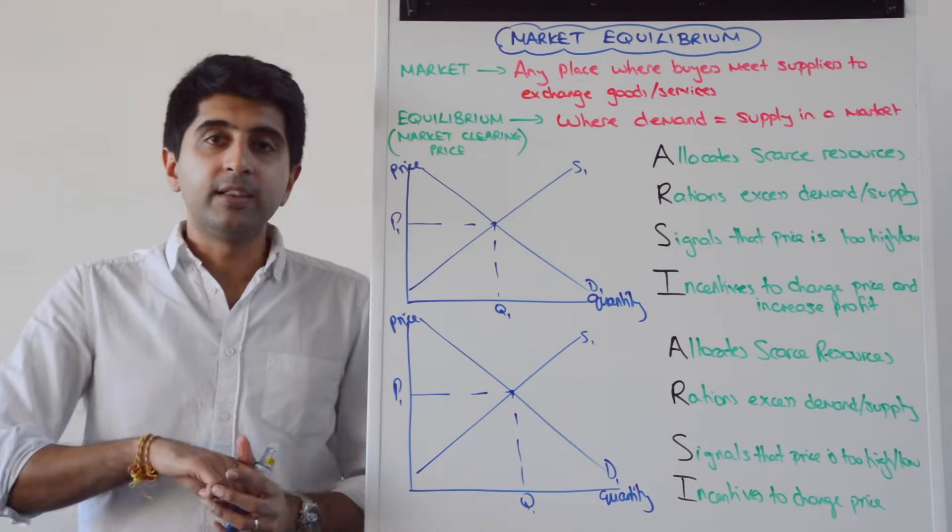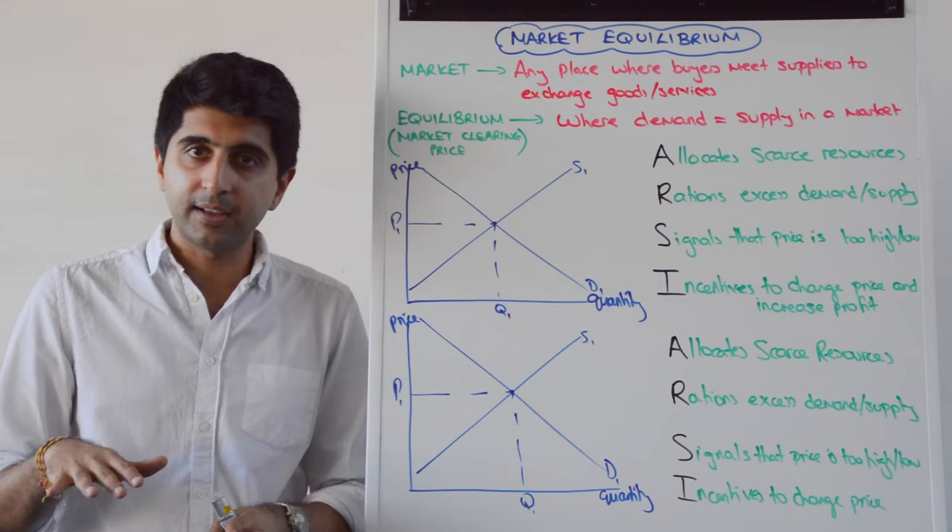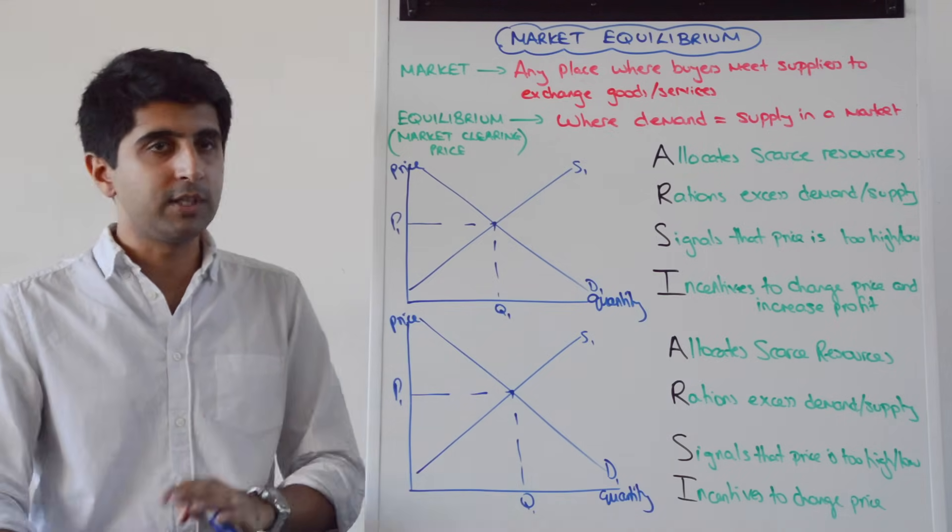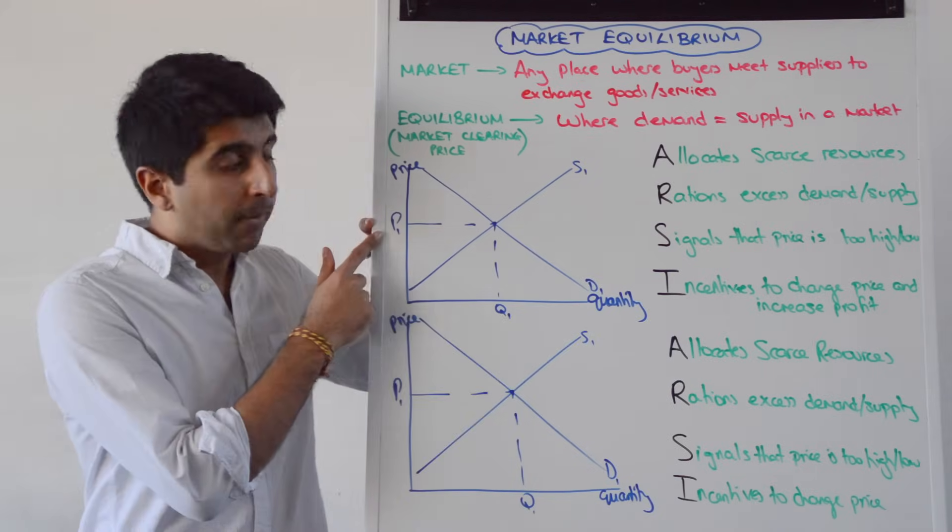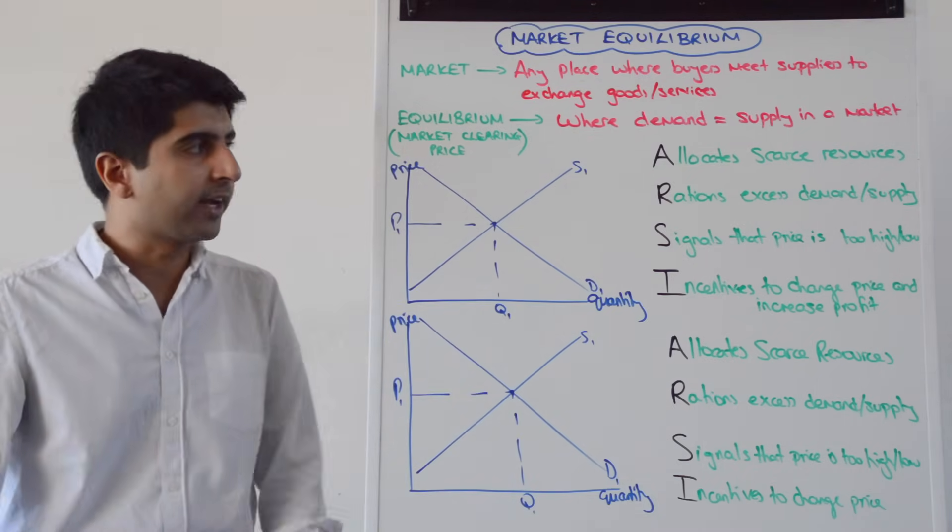Another name for equilibrium, we can say it's the point where the market clears. So the market is clear from excess demand and excess supplies. There is balance between demand and supply. We can call P1 the market clearing price and Q1 the market clearing quantity. Good to know that jargon as well.